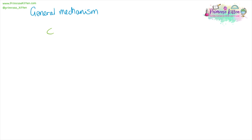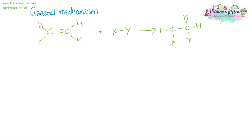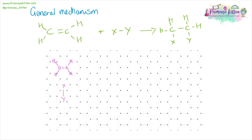We can start off with a general mechanism for what happens. Here we have our alkene, and for our general mechanism we are going to add X and Y to it. It is then going to break the double bond, and X and Y are going to add in across that double bond. Now, because this area here is very electronegative, it is going to shift the electrons down. In some things it's going to induce a dipole; in some things that dipole is going to be there already.